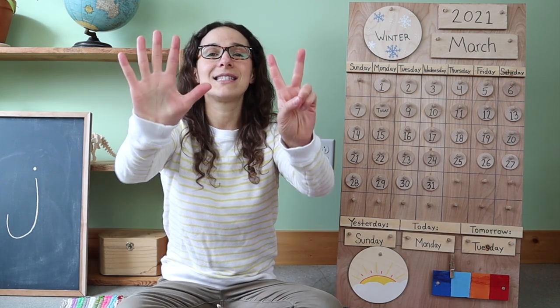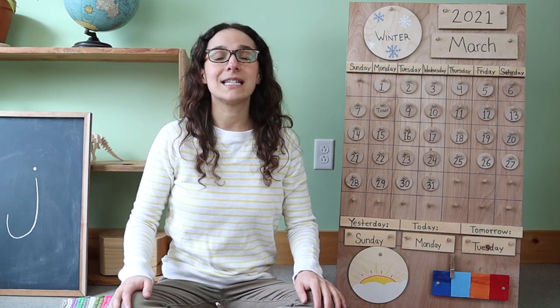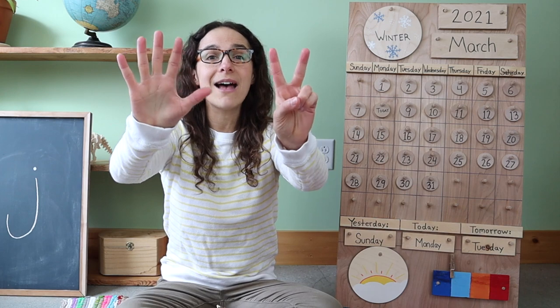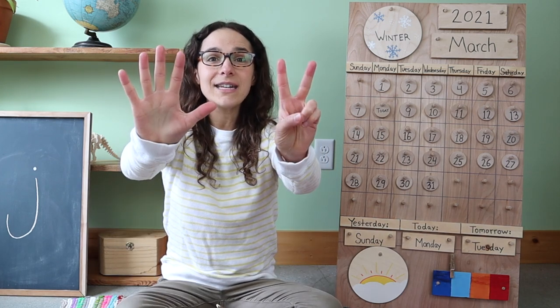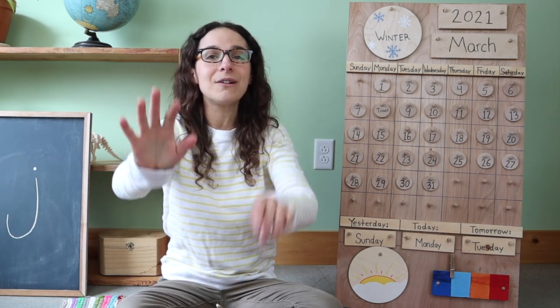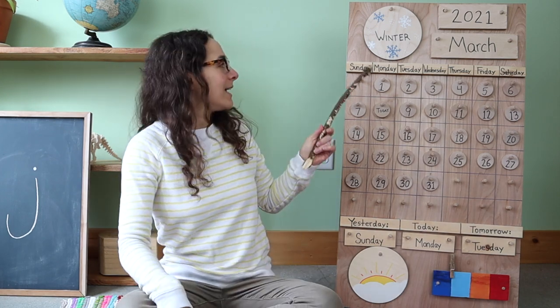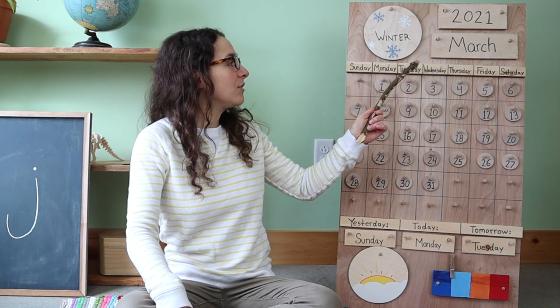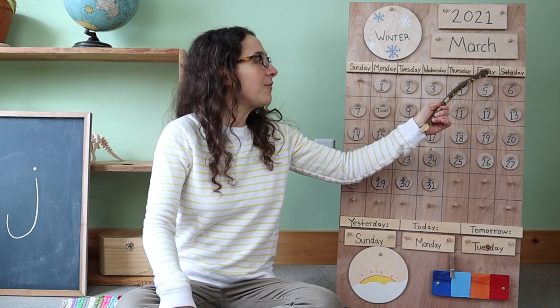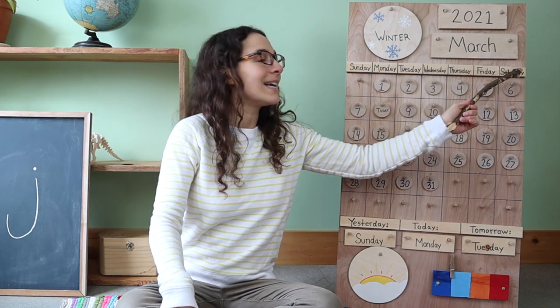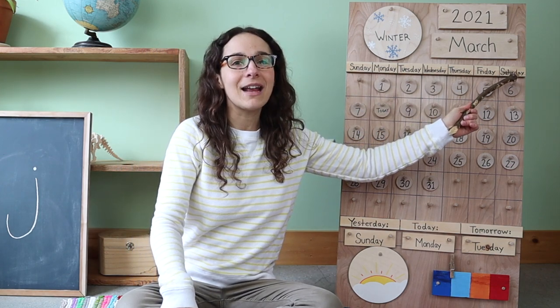There are seven days, there are seven days, there are seven days in a week. Sunday, Monday, Tuesday, Wednesday, Thursday, Friday, Saturday.